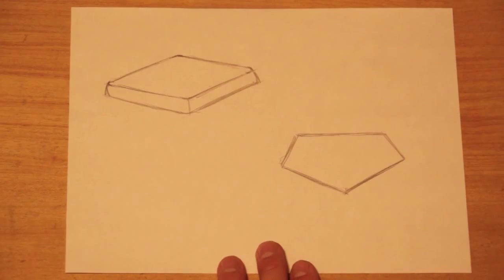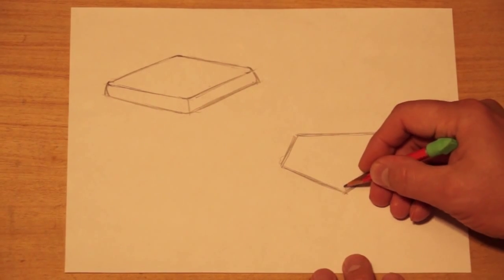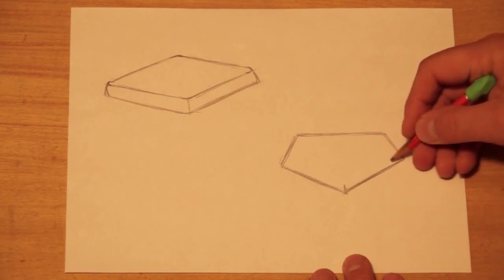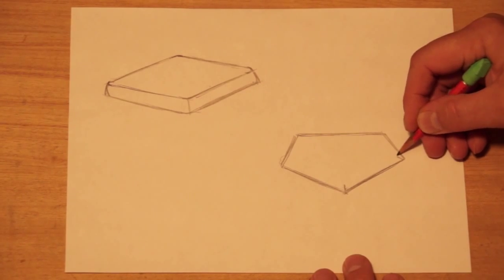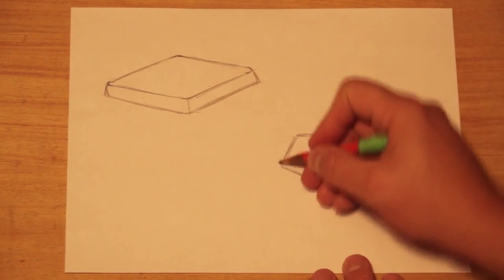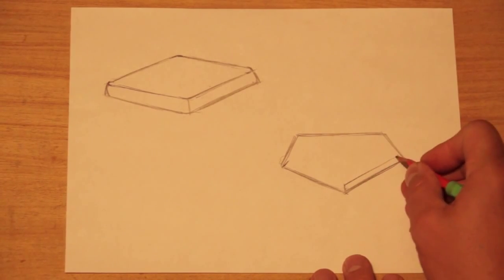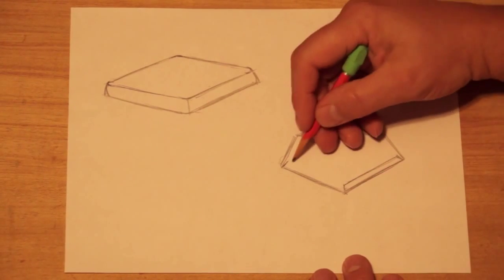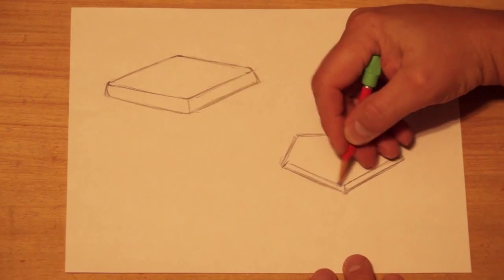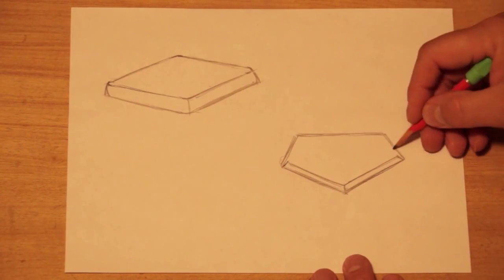Now to make this look even more 3D, a lot of the bases, they're built up. So I'm going to make this look like it's built up. So I'm going to make lines that slant in these corners. And I'll make a second line. So this is a raised surface that goes around the edge.